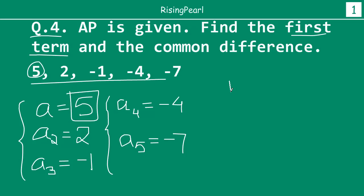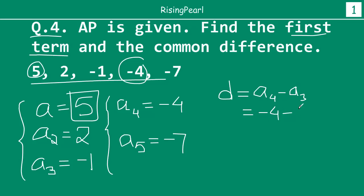The common difference, which is represented as D — you can pick any of these numbers from the second term onward. Let's say we pick the fourth term. So the common difference will be A4 minus A3. If you do that, A4 is minus 4, minus A3 which is minus 1. Make sure that you don't mix up the negative signs. So you will have minus 4 plus 1, which is minus 3. So the common difference is minus 3.